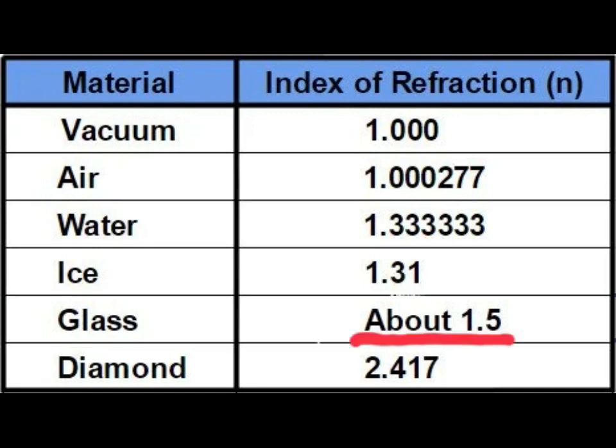For example, glass has an index of refraction of 1.5, meaning the speed of light in glass is 1.5 times slower than that in a vacuum.